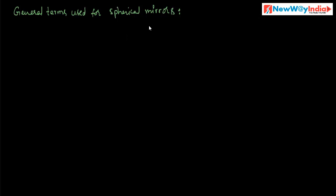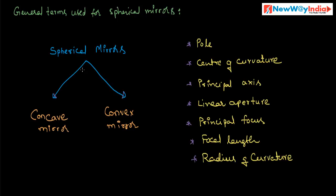General terms used for spherical mirrors. These are the different terms related to spherical mirrors. Spherical mirrors are divided into two types: one is concave mirror and another one is convex mirror. The important terms related to spherical mirrors are: pole, center of curvature, principal axis, linear aperture, principal focus, focal length, and radius of curvature.